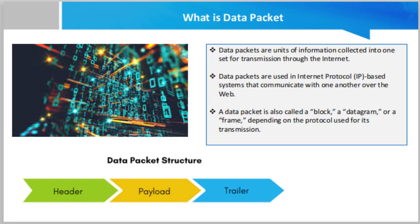When you send a message, an image, a video, or any form of communication over a network, they are divided into smaller chunks called data packets. A packet may contain around 1,000 to 1,500 bytes of data, so the number of packets that make up a whole piece of data varies depending on its size. A 1GB video, for example, may be broken down into multiple packets. Each packet is numbered to make reassembling easy and accurate.